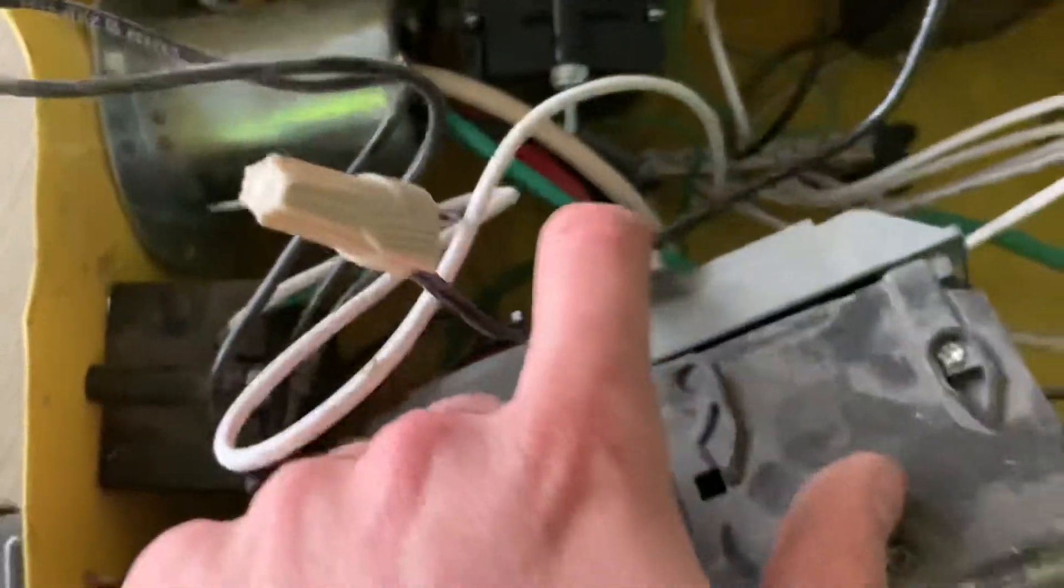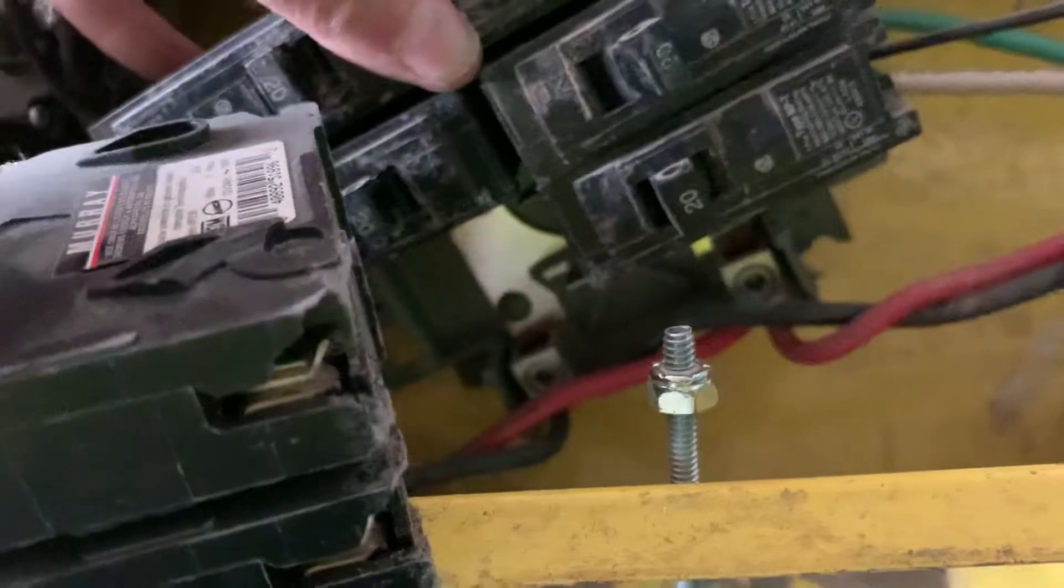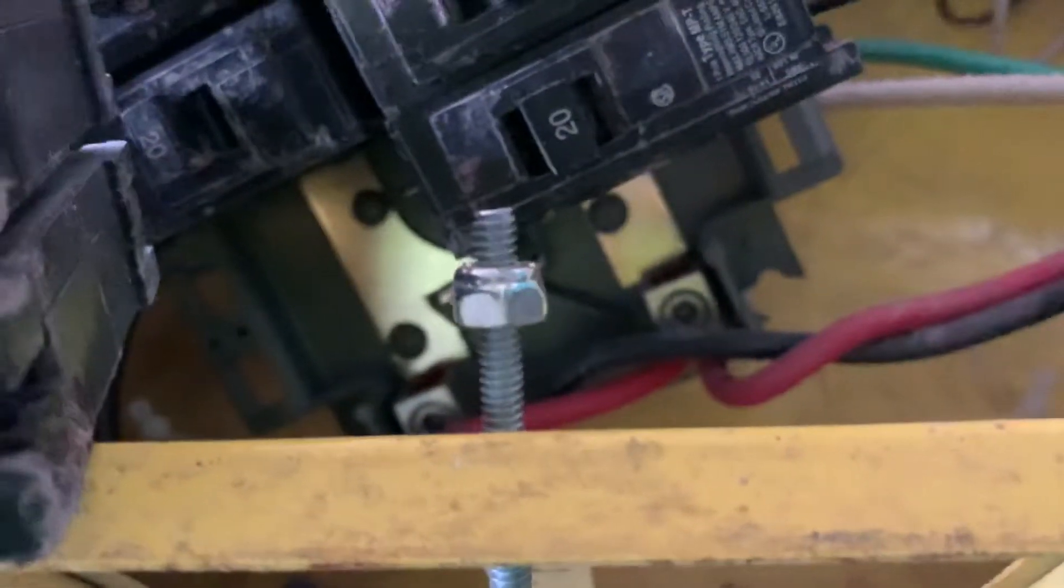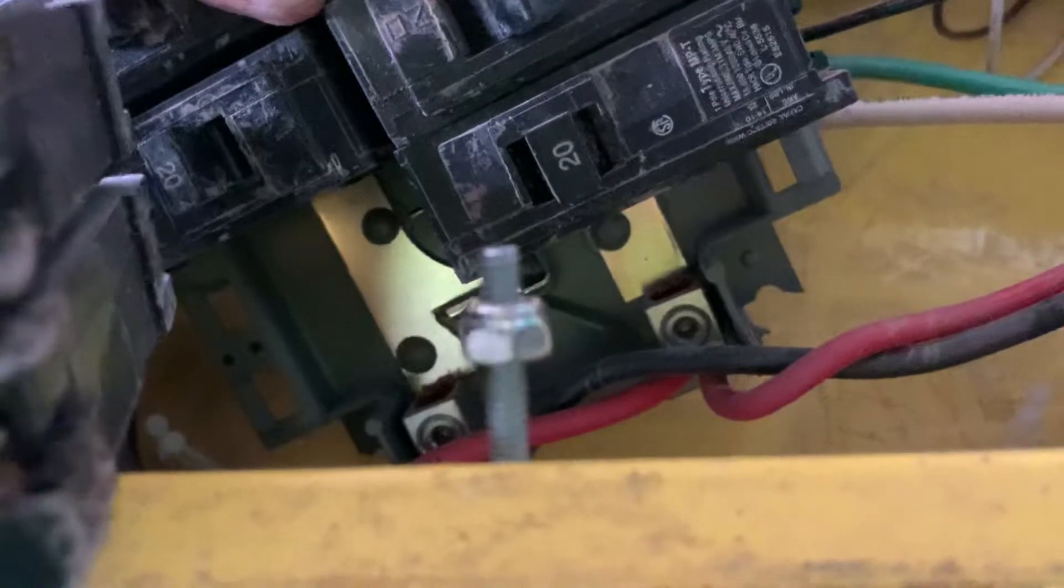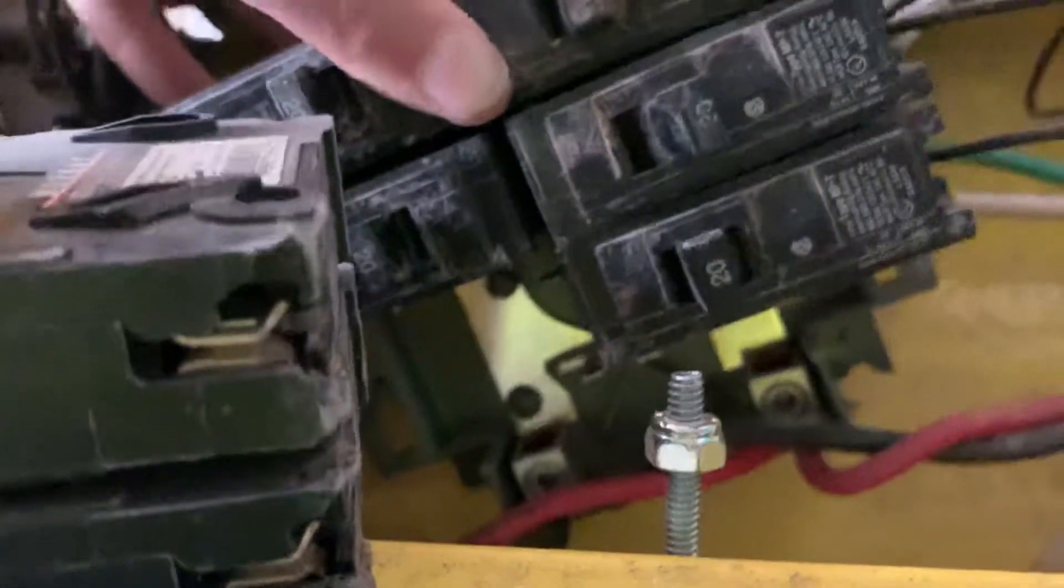And then it looks like the hots, the black and the reds, just go right here onto a little bus bar. So you got one side right there on the right - the reds - that's one side of the 120. And then the blacks are on the other side for the other side of the 120.